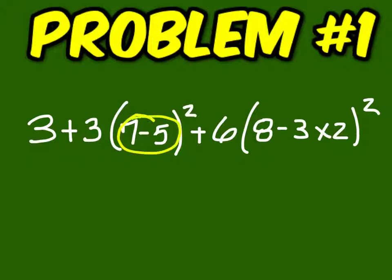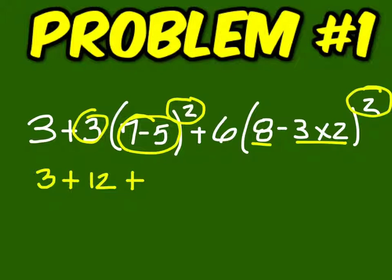Well, here you should have 2 squared is 4 times 3 is 12, so 3 plus 12, and then 8 minus 6 is 2 squared is 4 times 6 is 24, so you should end up with 39.